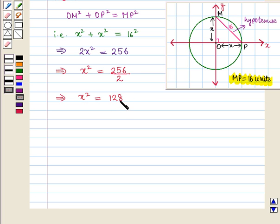Now taking positive square root on both sides we get X is equal to square root of 128 that is equal to 8 square root of 2.